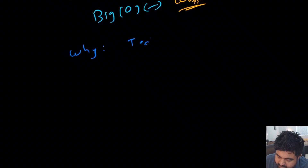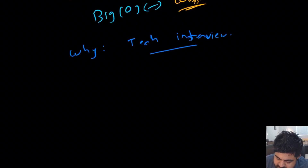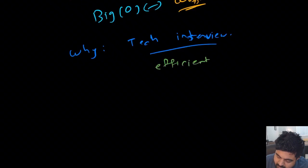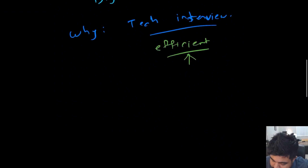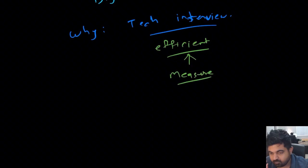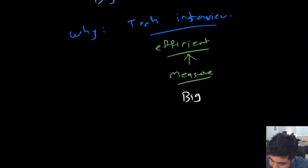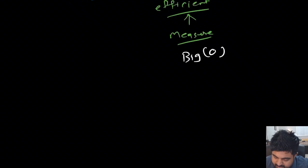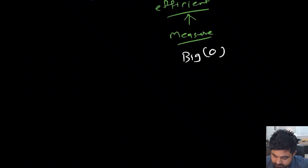Big O is very important in technical interviews. The purpose of a technical interview is to see how smart you are at building efficient solutions — and how would you know if a solution is efficient if you don't have any unit of measure to evaluate it? That is why there is a huge emphasis on Big O, and knowing how it is calculated is quite significant. Let's get started with a step-by-step guide to analyze different types of Big O.